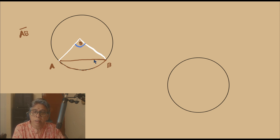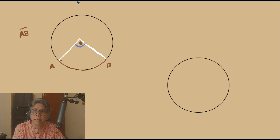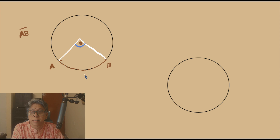Now do we mean anything by saying that an arc subtends an angle at the centre? Of course yes. The chord is not here now, but the same angle at the centre is now subtended by the arc AB — and this is the minor arc.